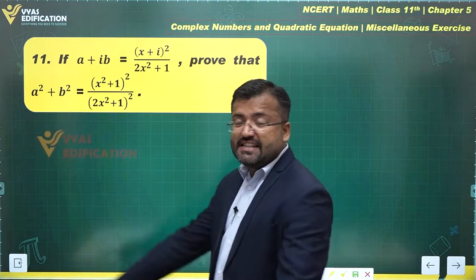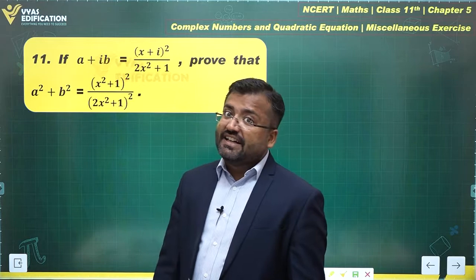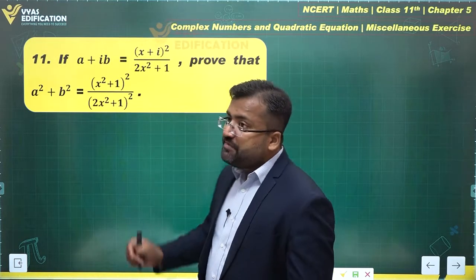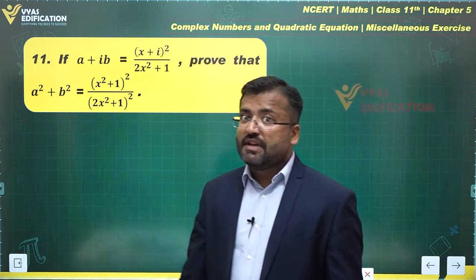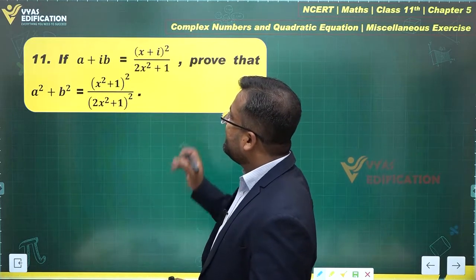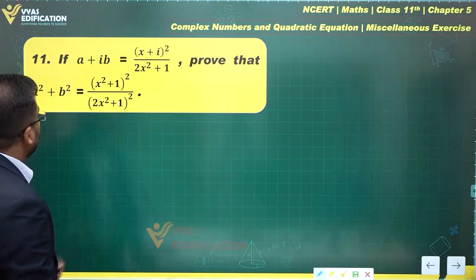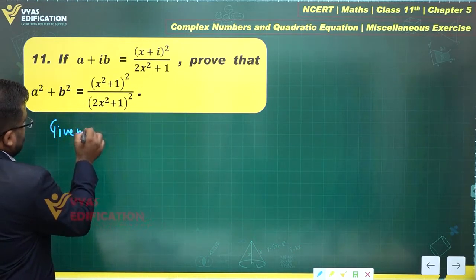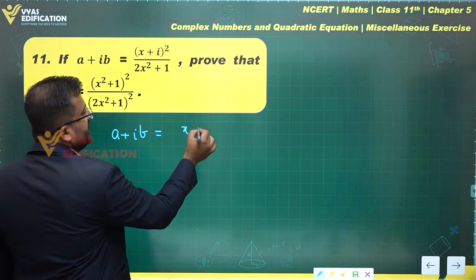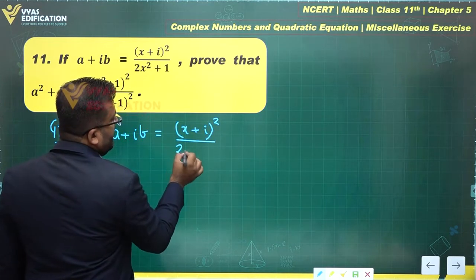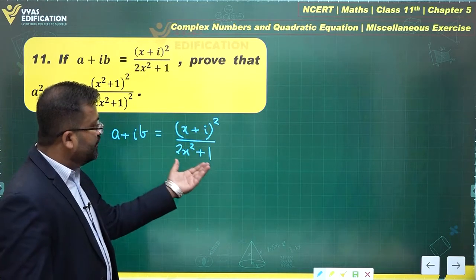The important thing to observe here is that a plus ib and a square plus b square are related in some way. a square plus b square is nothing but the square of the modulus of the complex number a plus ib. Something similar is happening on the right-hand side. So for proving this complete statement, let us begin with what is given: a plus ib is equal to x plus i whole square over 2x square plus 1.